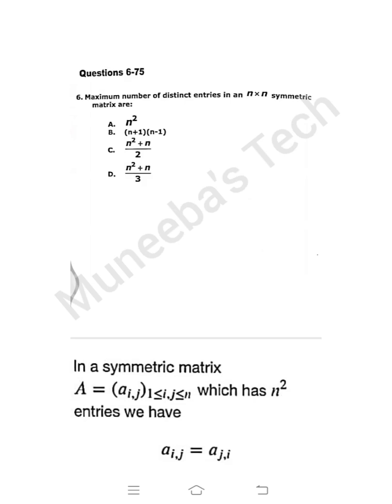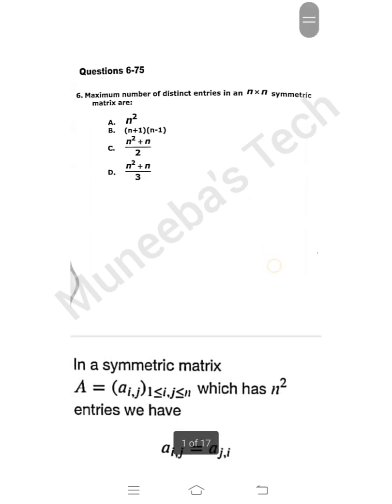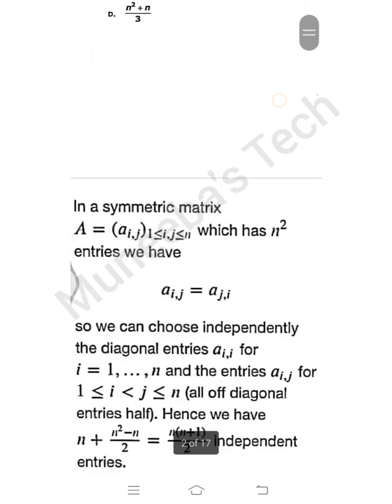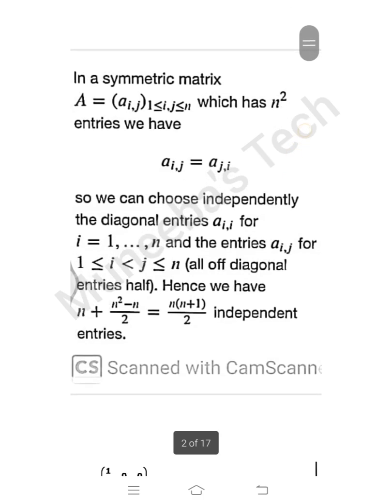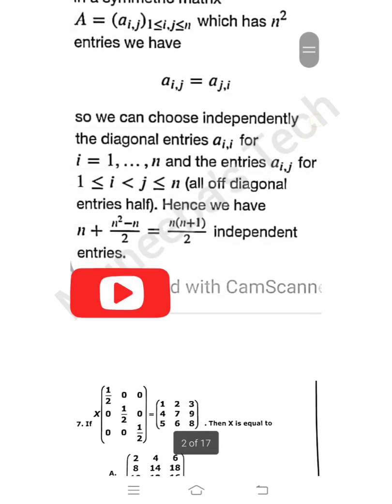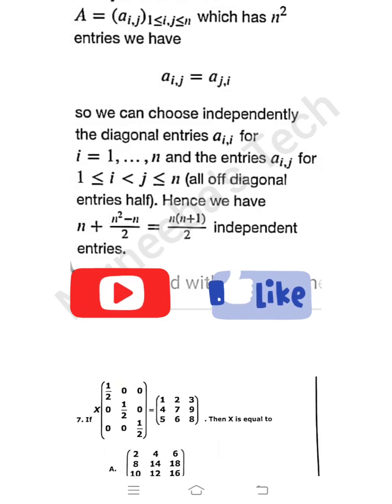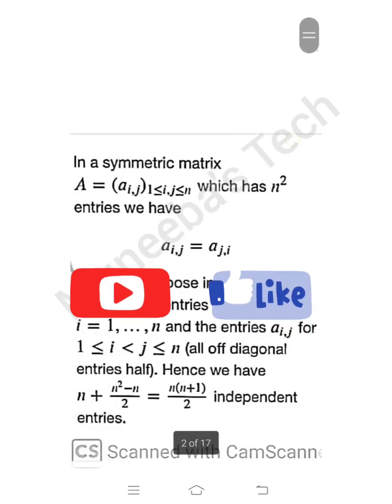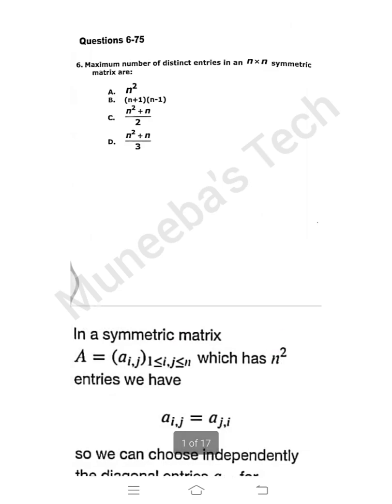Question number 6: Maximum number of distinct entries in an n by n symmetric matrix. The option C is correct. In a symmetric matrix A = a_ij where i shows the rows and j for columns, which has n square entries, we can choose independently the diagonal entries for i from 1 to n. Hence we have n plus (n² - n)/2 which equals n(n+1)/2 independent entries, which is the maximum value. So the answer is n² + n over 2.